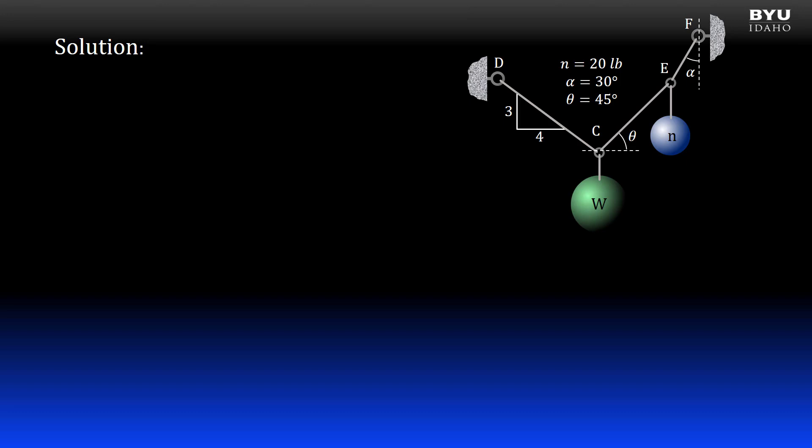We'll begin our solution by analyzing the possible free body diagrams. We can draw two, one at C and one at E.